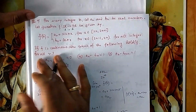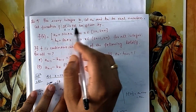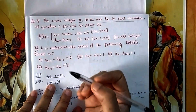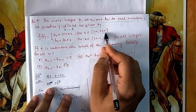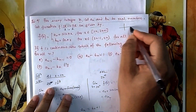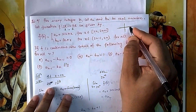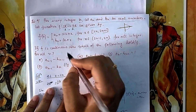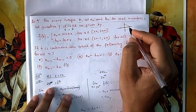In question number 4, for every integer n, aₙ and bₙ are real numbers. The function given from R to R is defined piecewise: one expression for x in [2n, 2n+1] and another for x in [2n-1, 2n]. Notice that 2n are even multiples and 2n±1 are odd multiples — think of these as multiples of 90 degrees on the unit circle.